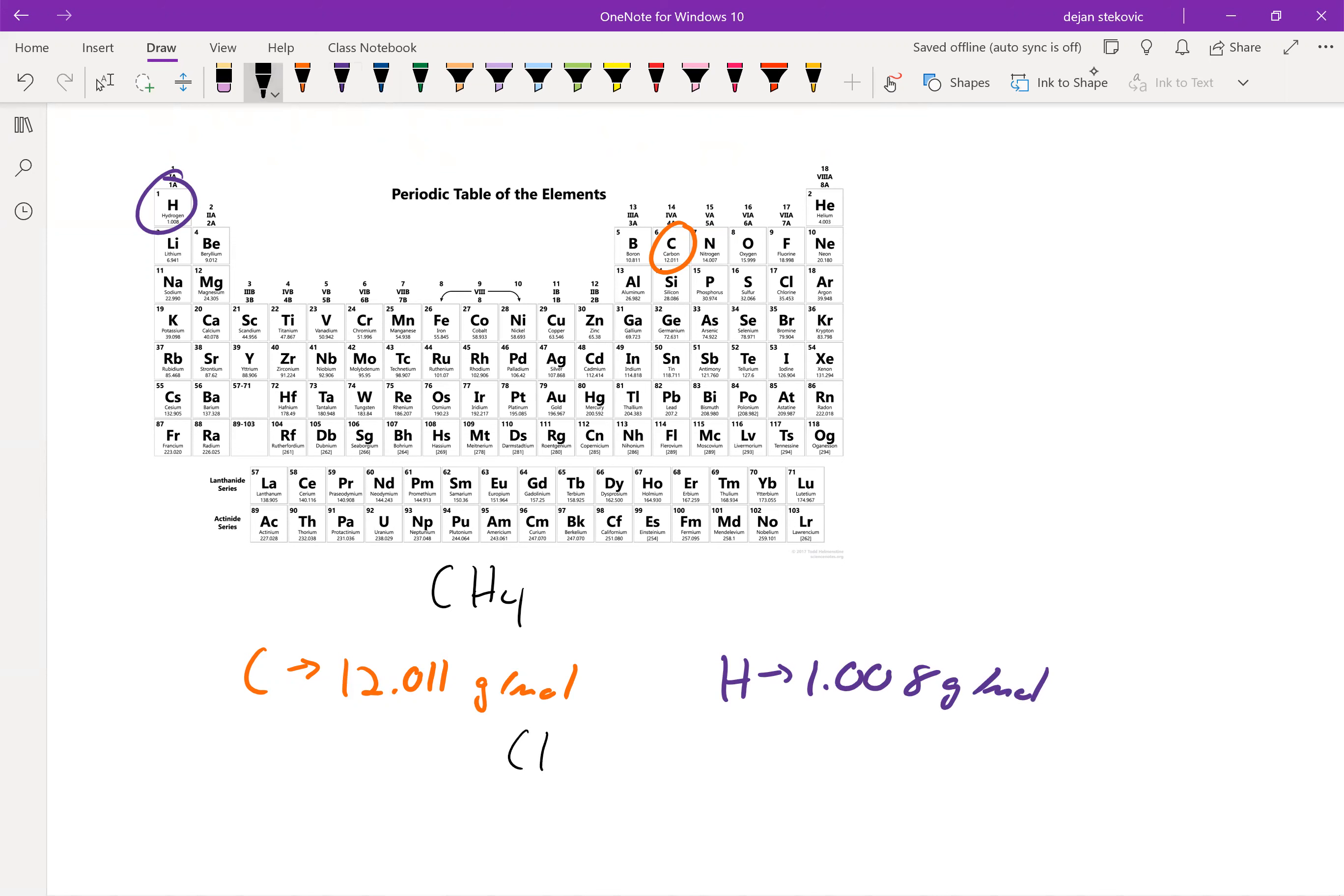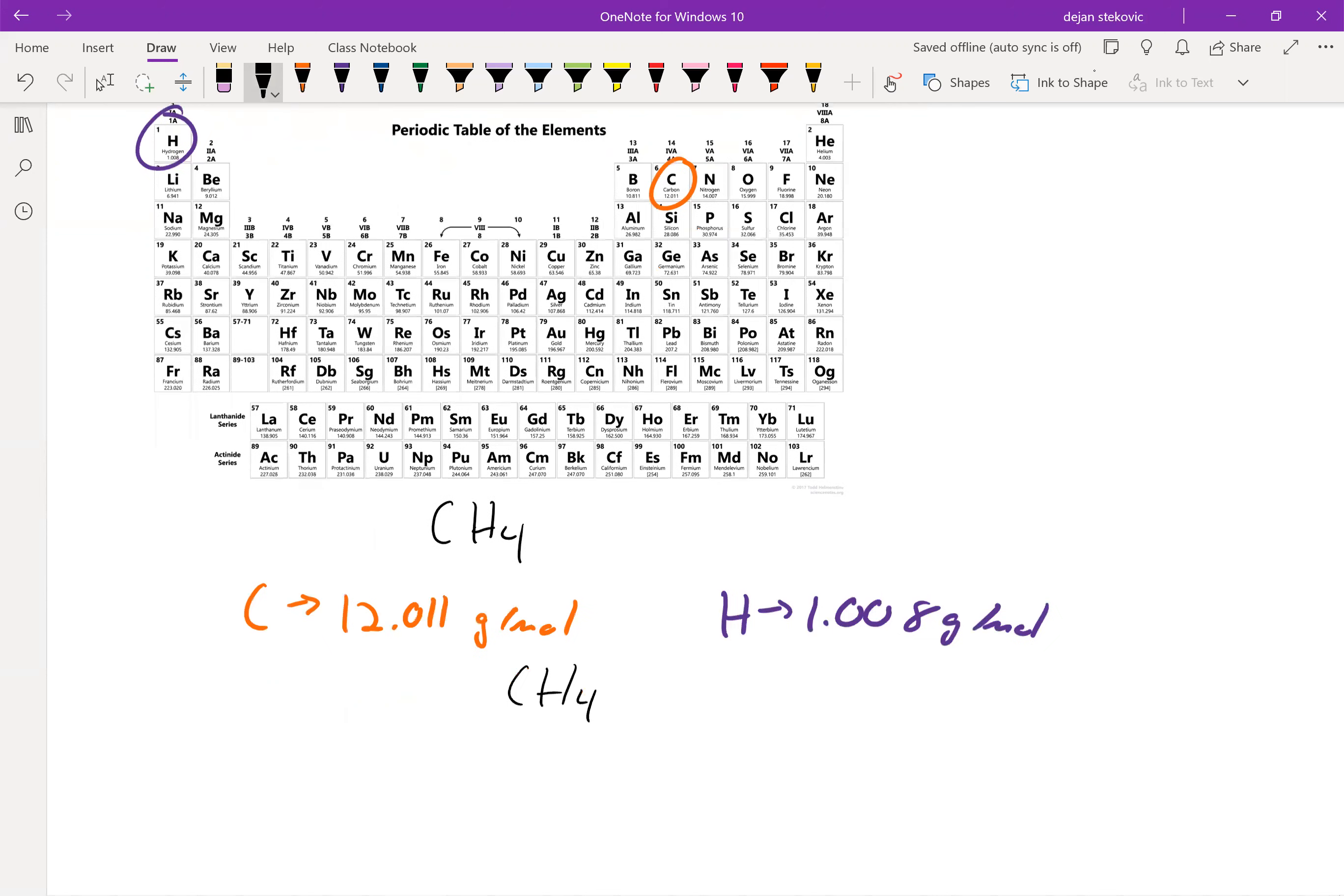And then hydrogen weighs 1.008 grams per mole. And then of course, CH4 would then be the mass of one carbon and four hydrogens, right? So you just do one times 12.011, and then add that up to four times 1.008. And then you get a total mass of 16.043 grams per mole.